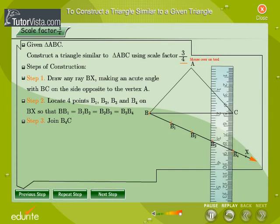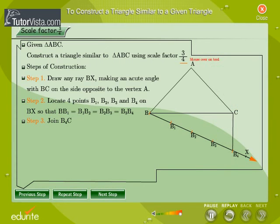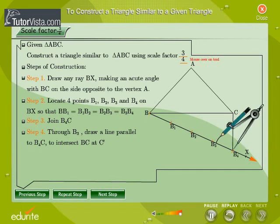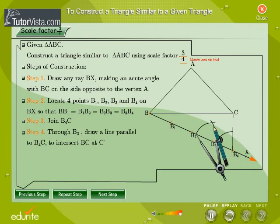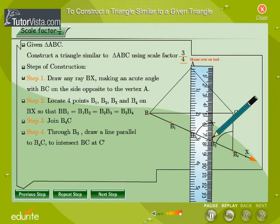Step 3: Join B4C. Step 4: Through B3 (three being the smaller of three and four in the ratio), draw a line parallel to B4C to intersect BC at C'.